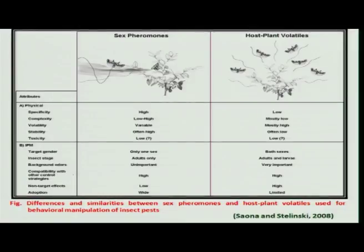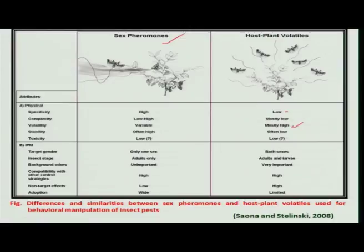What is the main difference between sex pheromones and the chemicals produced by the host plant? Host plant chemicals are mostly volatile, they are not specific, and they attract both sexes of insects and at the same time other species. Whereas sex pheromones attract only a particular species or the same species, and their volatility is variable from low to high.